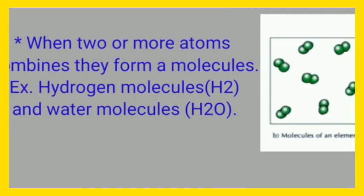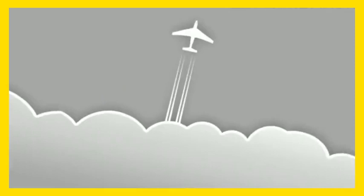When two or more than two atoms combine, they form a molecule. Now, molecules are made up of atoms of either the same kind or different kinds. Example: hydrogen molecule, water molecule. Here, water molecule contains both hydrogen and oxygen atoms.